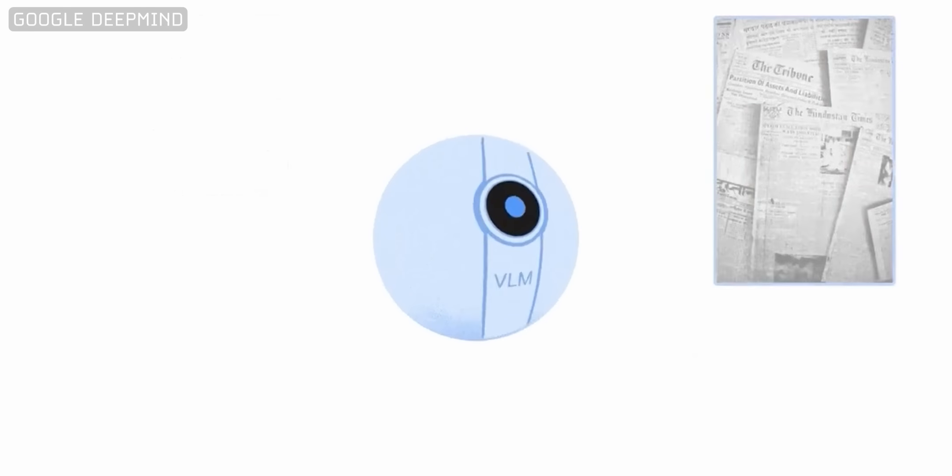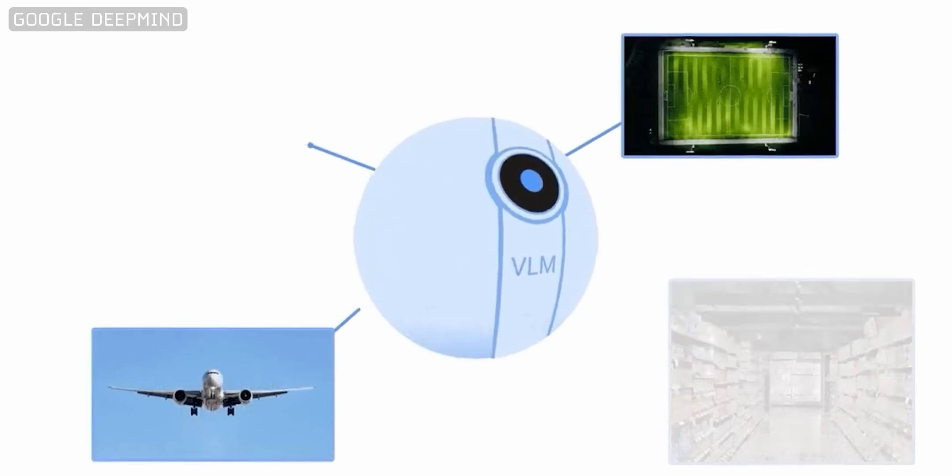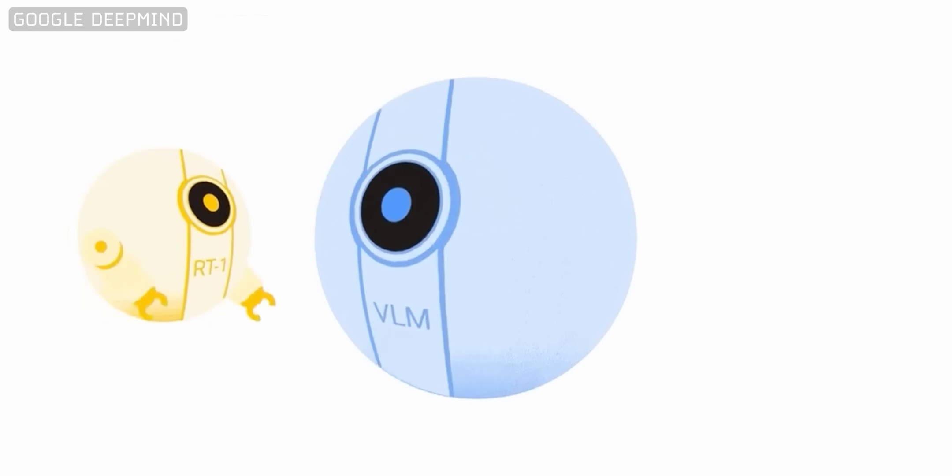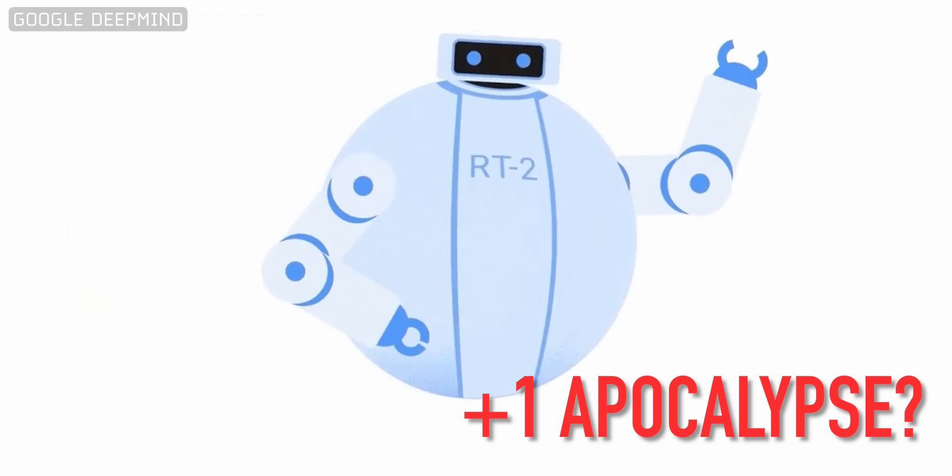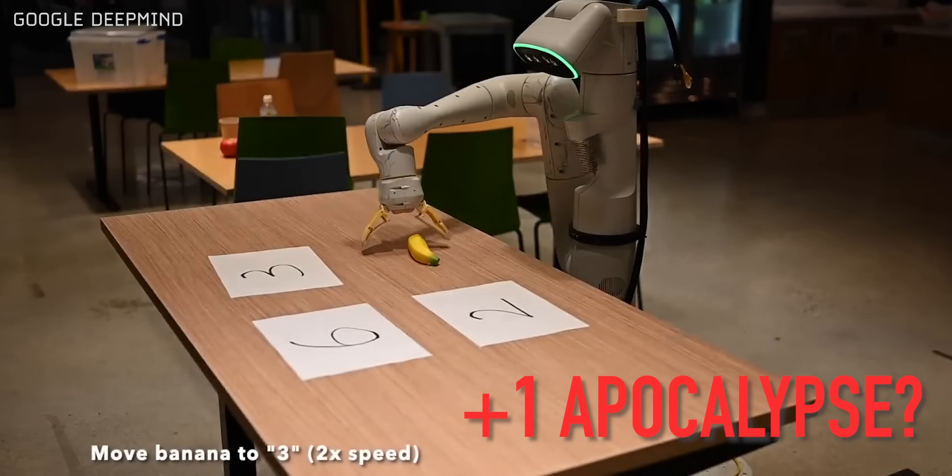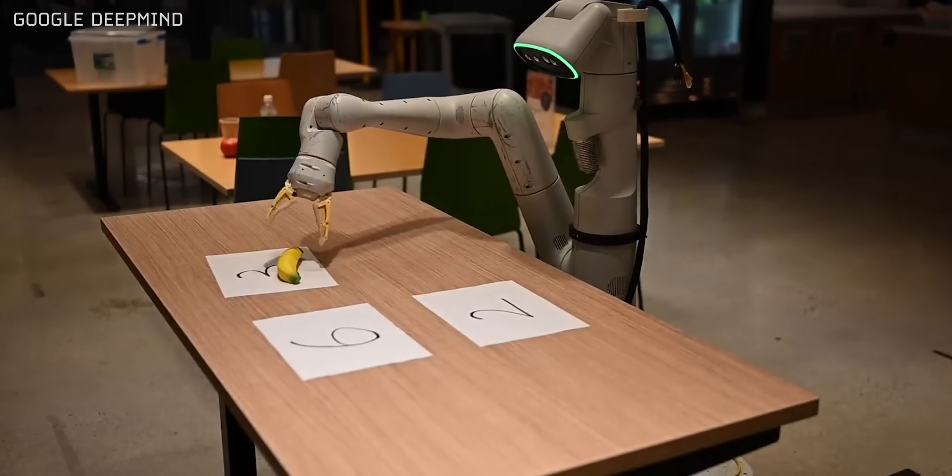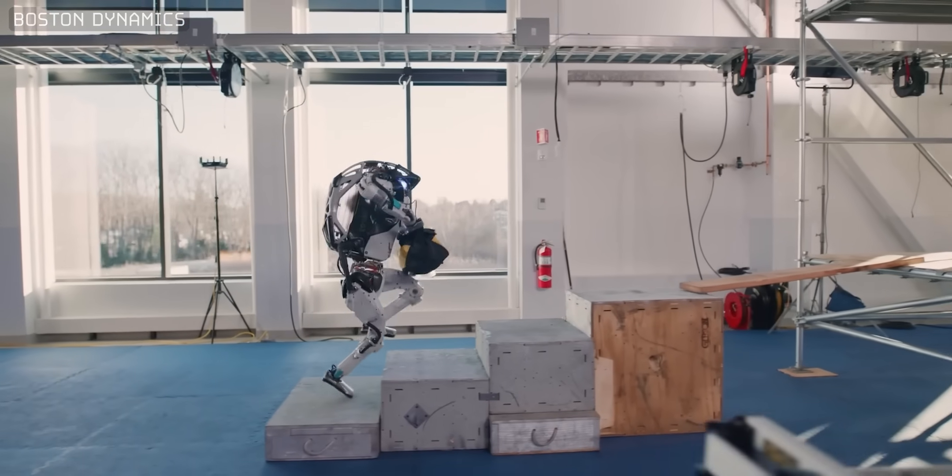RT2 is basically a large language model for robots. It lets them learn from robotics data and data on the internet, which lets robots do some basic reasoning, just like ChatGPT. That means that robots can understand and execute commands that they've never seen before, which is a very big deal.